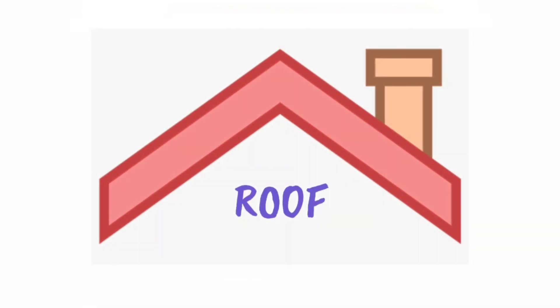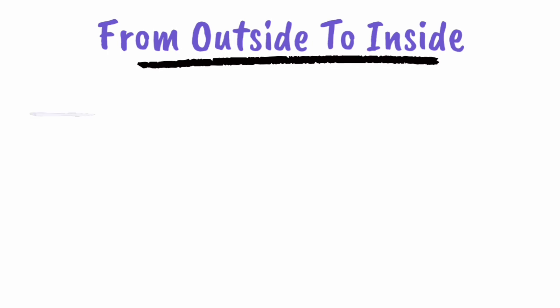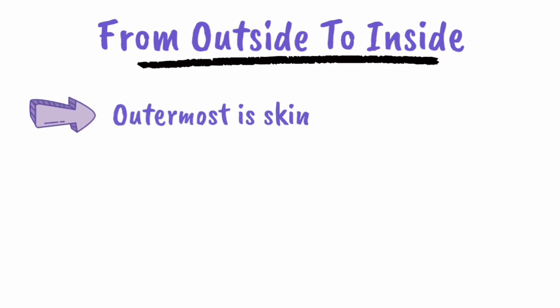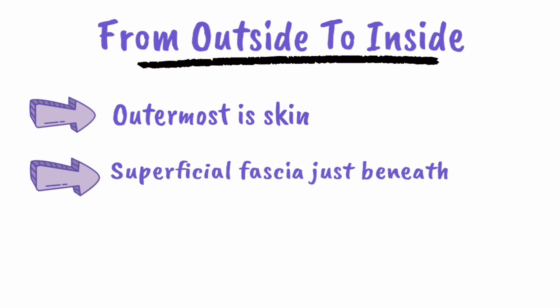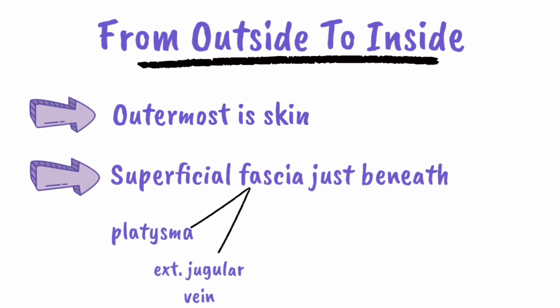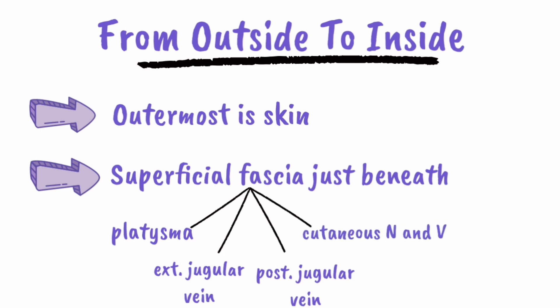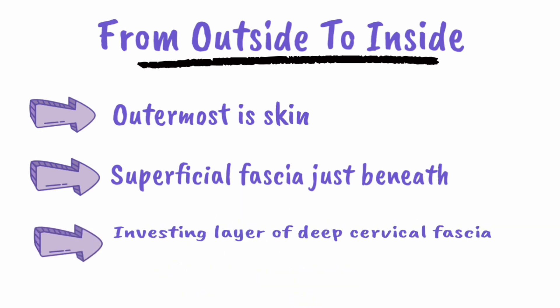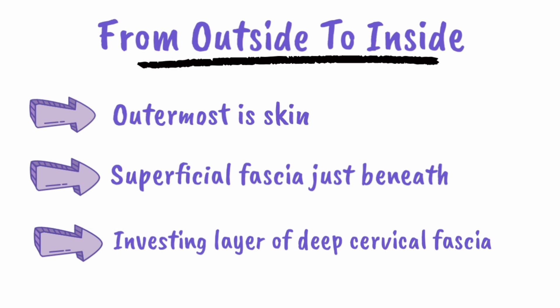The roof of the triangle from outside to inside: the outermost layer is the skin, beneath that we have the superficial fascia containing the platysma, external jugular vein, posterior jugular vein, and some cutaneous nerves and vessels. Deeper to that we have the investing layer of deep cervical fascia.